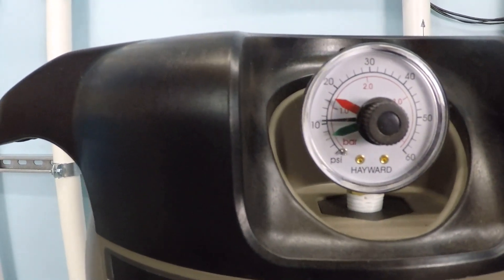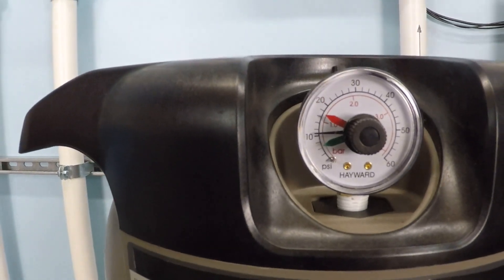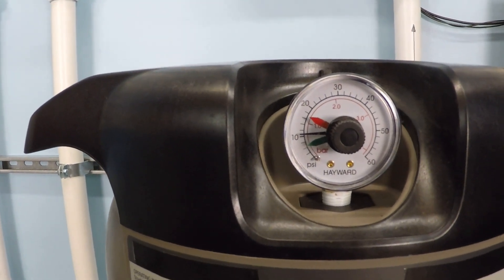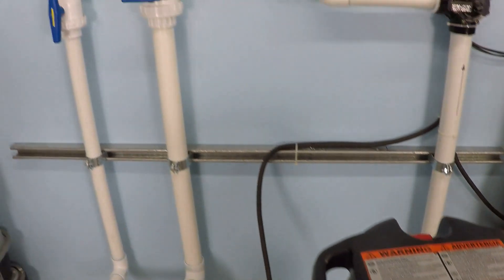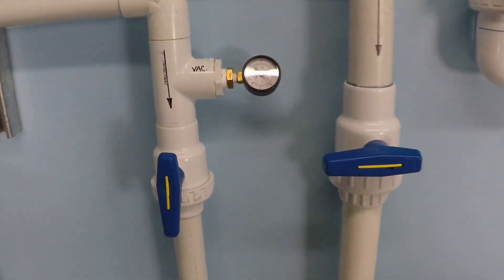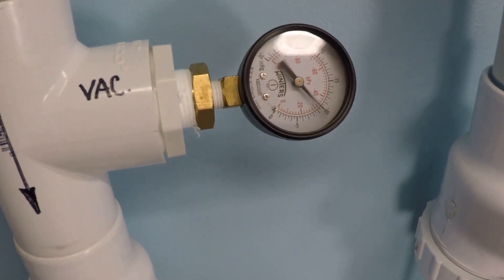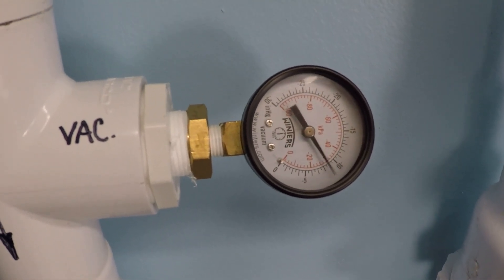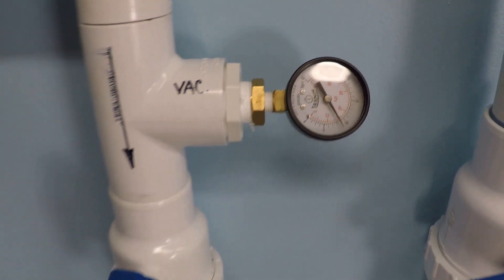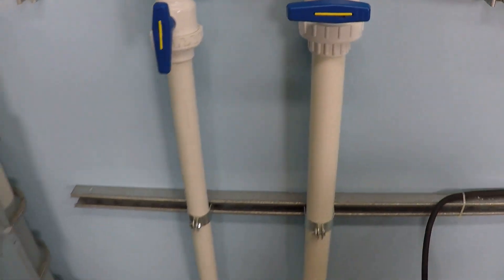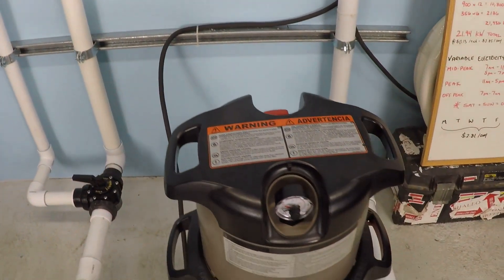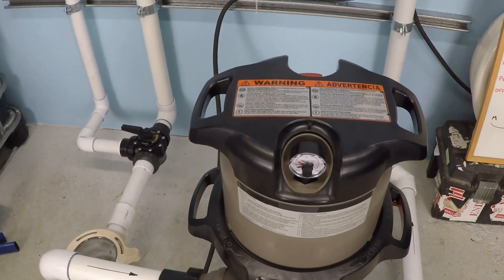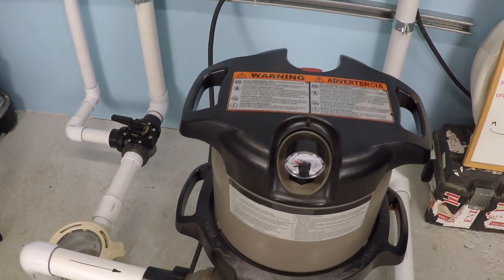That's right around 10, 10 and a half psi. I think that puts this pool system somewhere around 35 feet of head resistance.